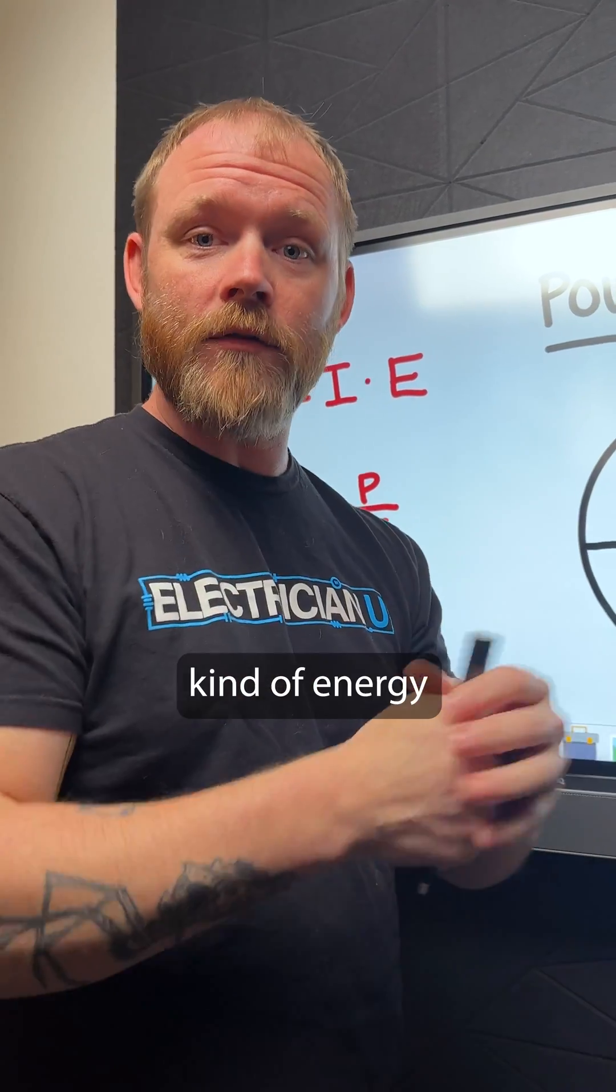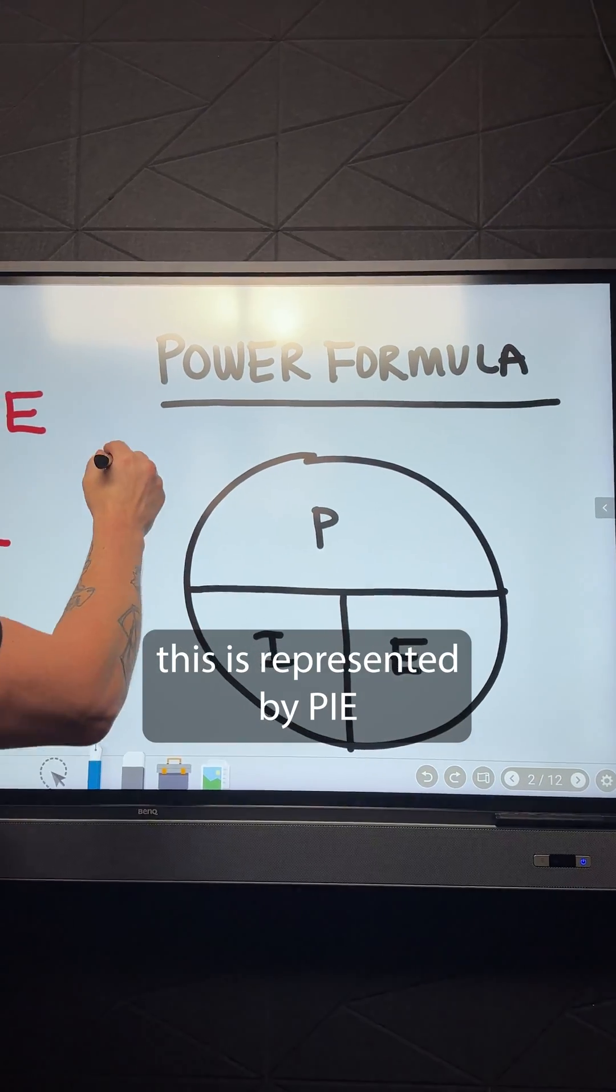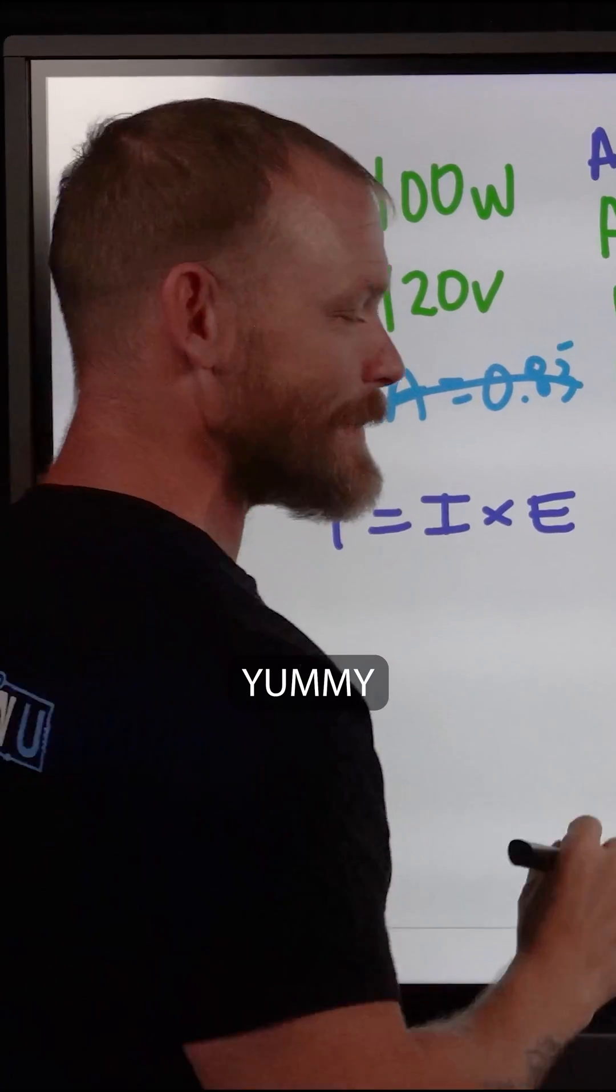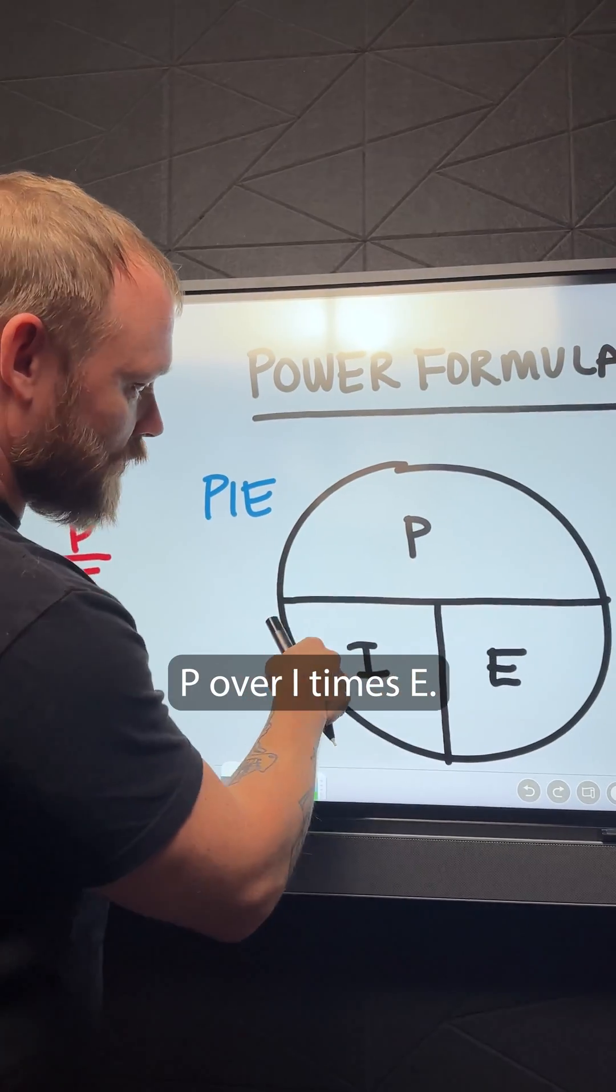From one kind of energy to another kind of energy. In electrical circuits, this is represented by PIE. I always remember PIE. Yummy. P over I times E.